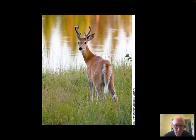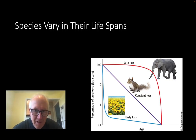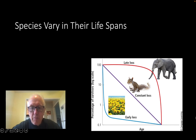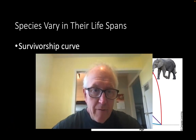Survivorship curves show that some species die off very quickly after birth — like mosquitoes — while others die at a constant rate, and others like larger mammals live longer. That's the idea of the survivorship scale.